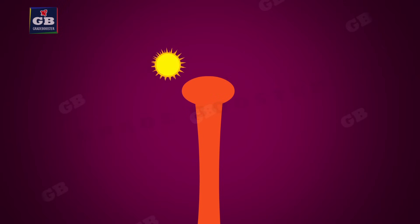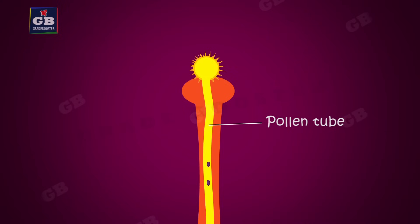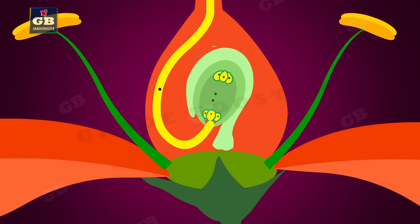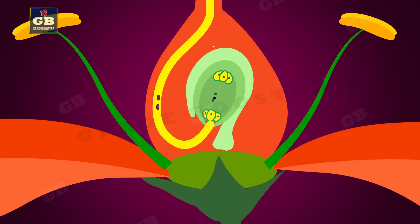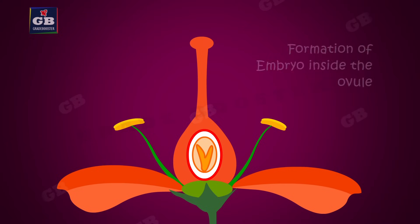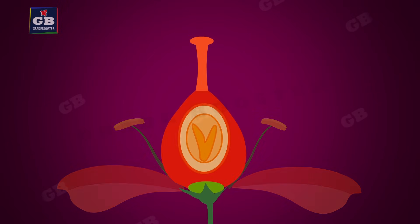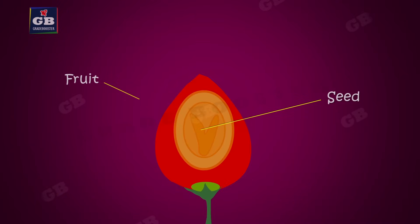The pollen grains produced by the anther are transferred to the stigma of the pistil. The pollen grain germinates and produces a long tube called the pollen tube into the style to reach the ovule. The pollen nucleus and two germ cells travel through the pollen tube and fertilize the egg. After fertilization, the zygote divides several times to form an embryo within the ovule. The ovule develops into a seed and the ovary grows to form a fruit.